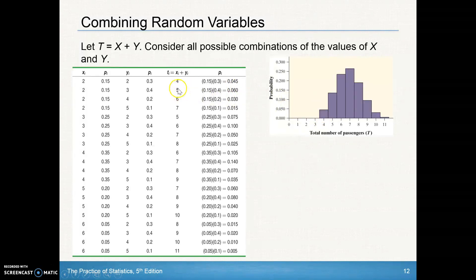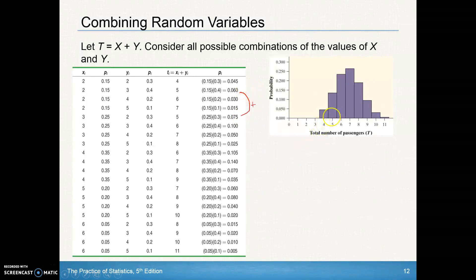There are a couple of different ways to get five passengers total. Two from the Jeep tour and three from Erin's, or three from the Jeep tour and two from Erin's. The first combination gives 0.15 times 0.4, and the second gives 0.25 times 0.3, which is 0.075. Adding those two values together gives a total probability of about 0.135 for five passengers. We continue doing this for the whole distribution of probabilities.